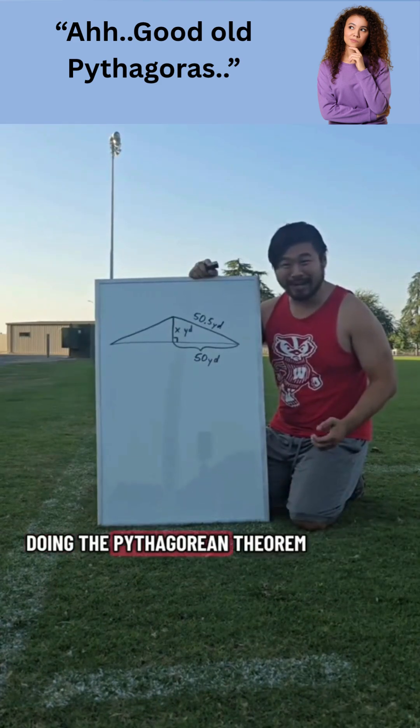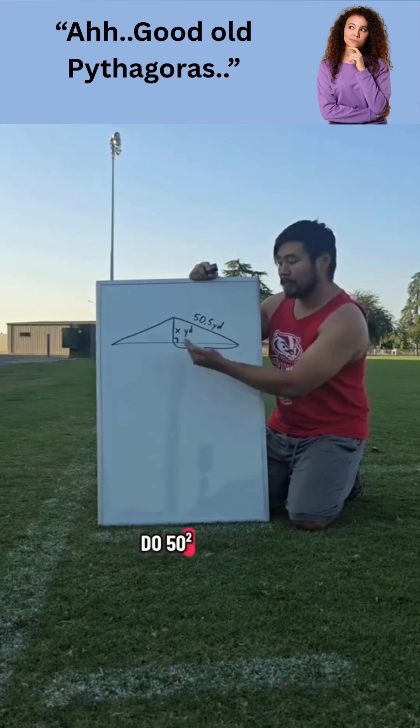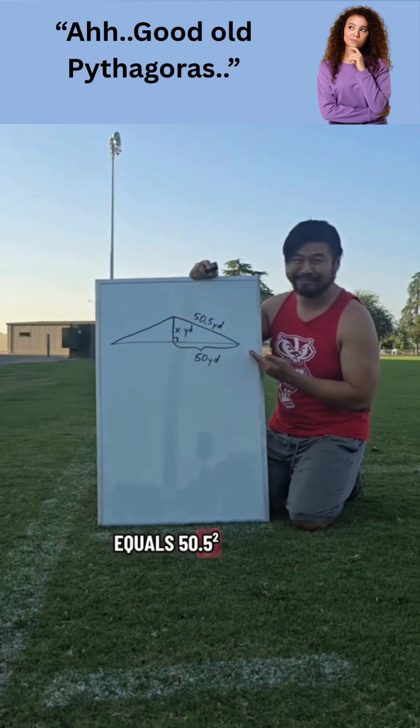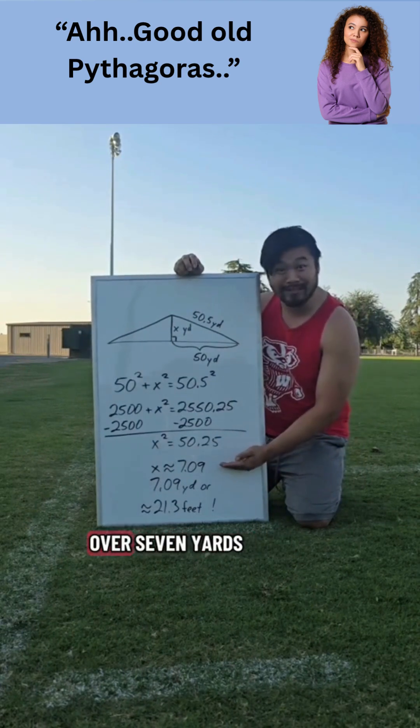So we can solve this by doing the Pythagorean theorem. When we draw it out, we can see that we can do 50 squared plus x squared equals 50 and a half squared. And when we do the calculation, we can see that we can lift the string over seven yards.